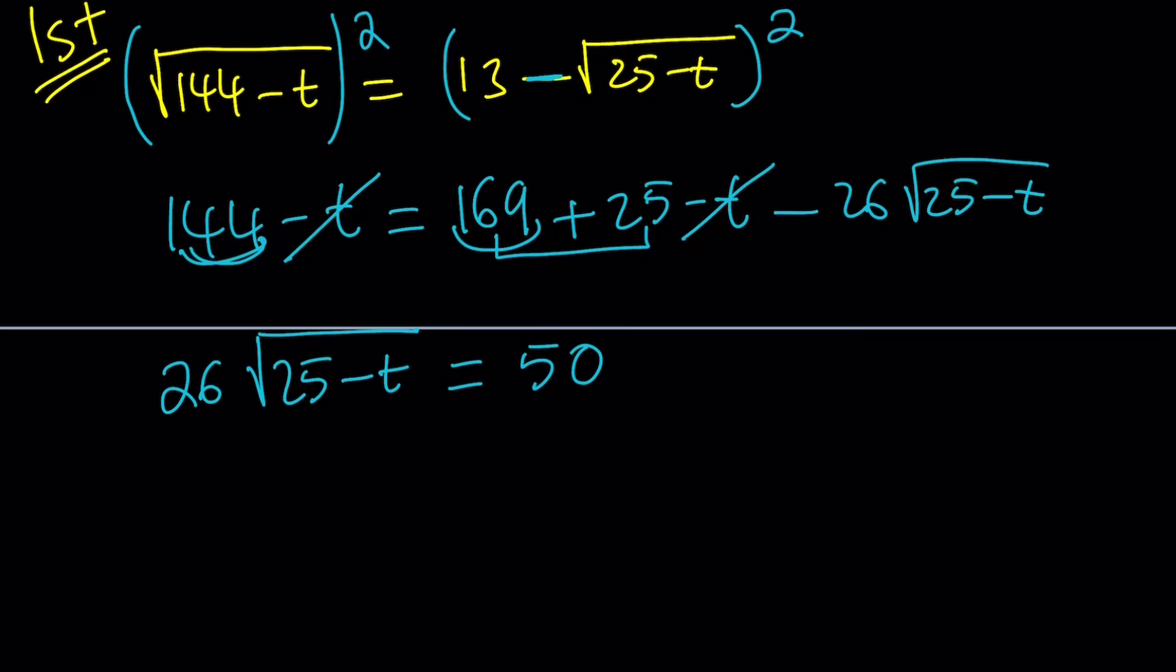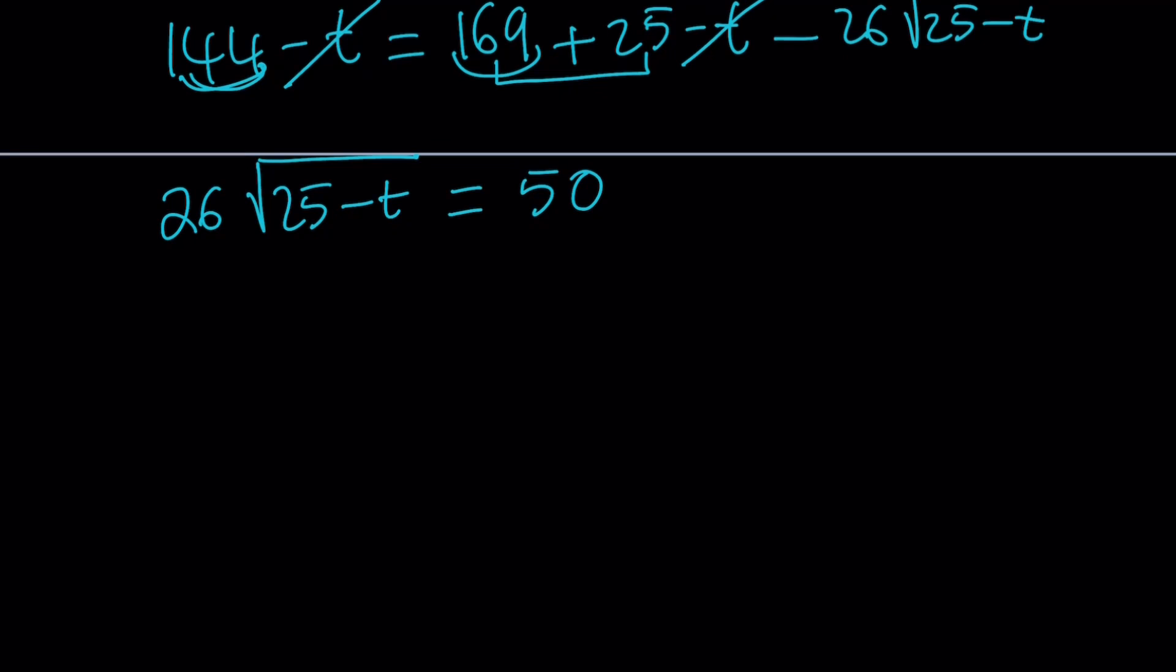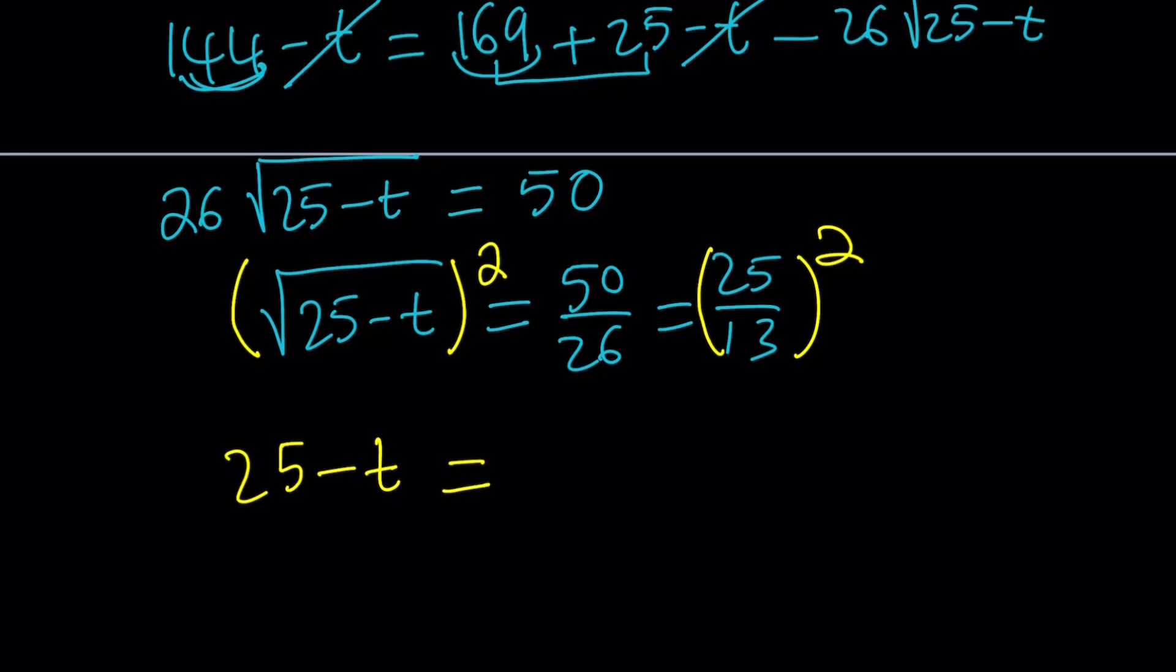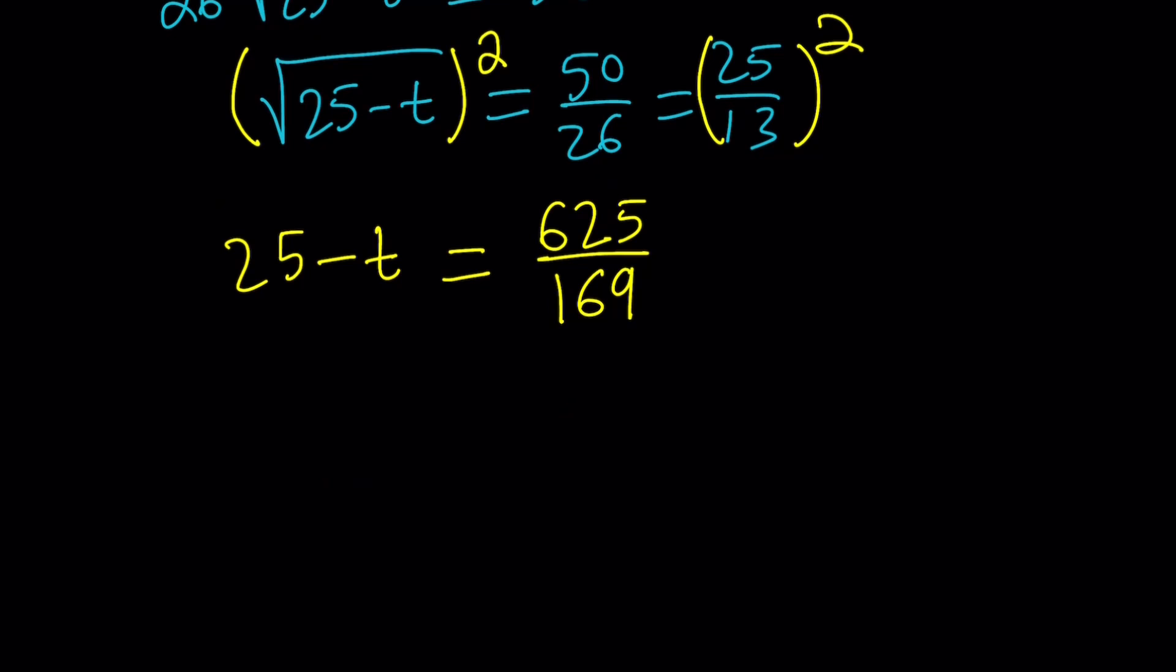So we end up with a single radical. We can put that on the left, and here we have 169 plus 25, but we can also think of it as 169 minus 144, which is 25 plus 25, and that will be 50. It's a little easier if you subtract first. And then we're going to divide both sides by 26. That gives us the square root of 25 minus t equals 50 divided by 26, which is the same as 25 over 13.